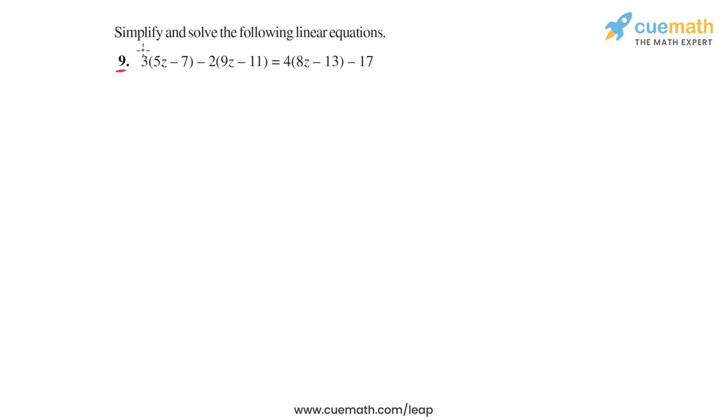On the left side, we have two terms. We have 3 times 5z minus 7, and then we have minus 2 times 9z minus 11. On the right side, we have 4 times 8z minus 13, and then we have minus 17.